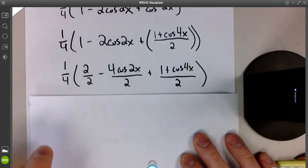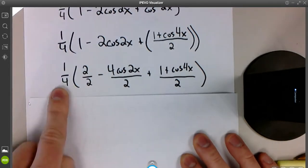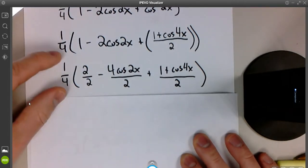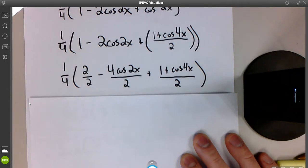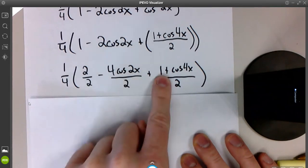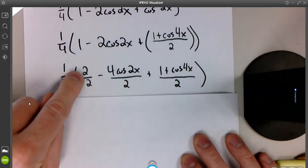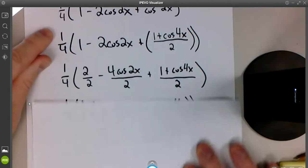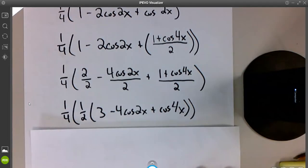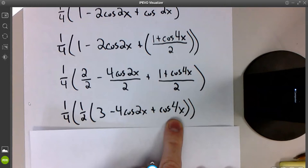Now that they're all over 2, they would all be over a single common denominator of 2, which I will pull out with this 1 4th. And instead of 1 4th, we'll have a 1 8th out there. But now the stuff on the inside, we have 2 minus 4 cosine 2x plus 1 plus cosine 4x. We actually have some like terms there. They're sneaky, but there's a 2 plus a 1 inside there, which is 3.